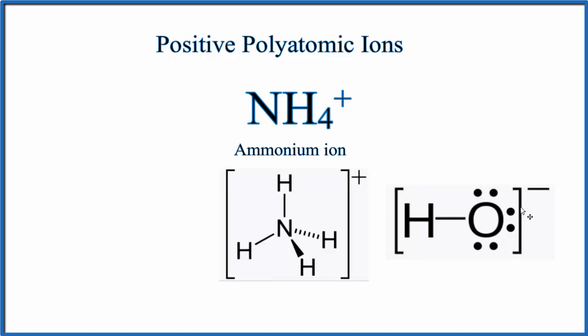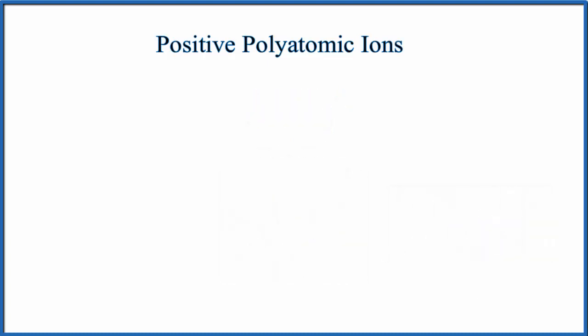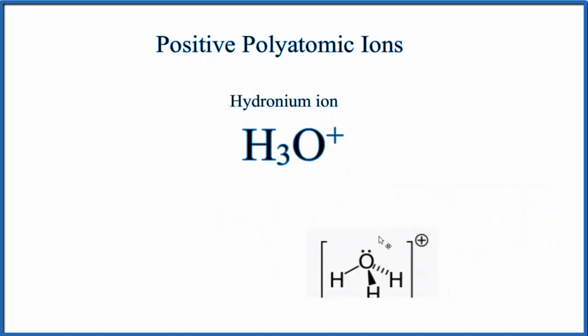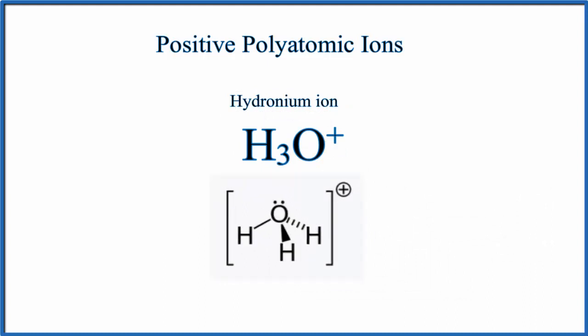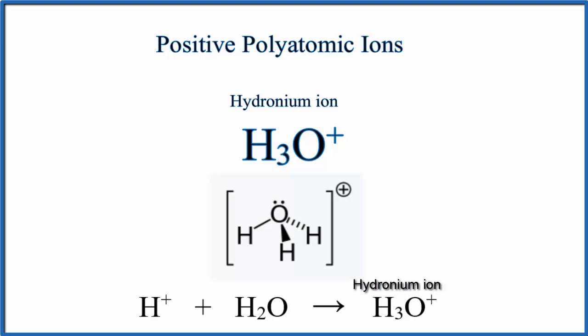There's another polyatomic ion that has a positive charge that you'll also see. It's called the hydronium ion, and it looks like this. The hydronium ion is related to acid-base chemistry. When we put an acid in water, the H dissociates and forms H+, and then the H+ joins with the H2O to make the hydronium ion, H3O+.